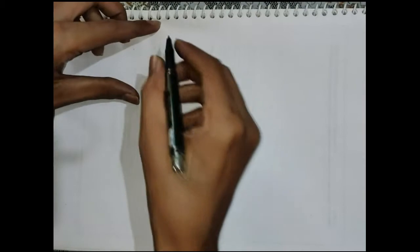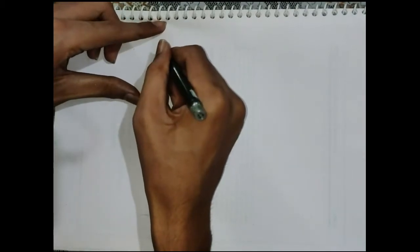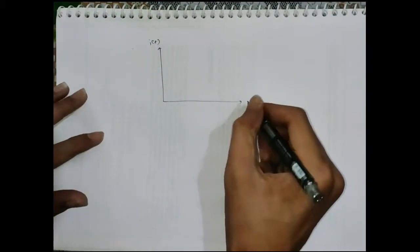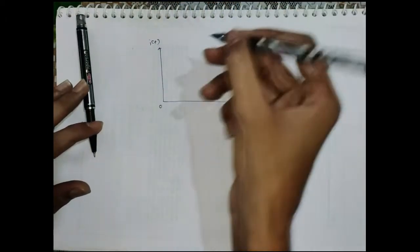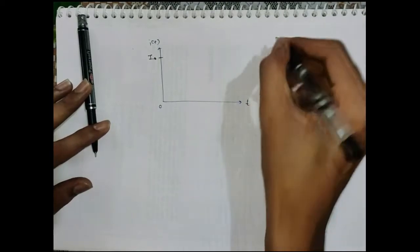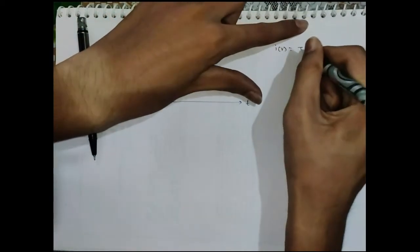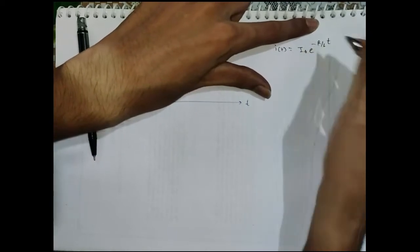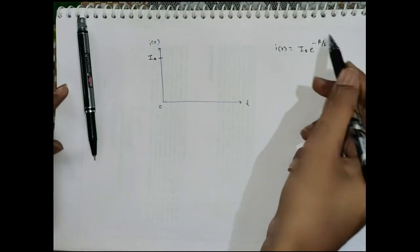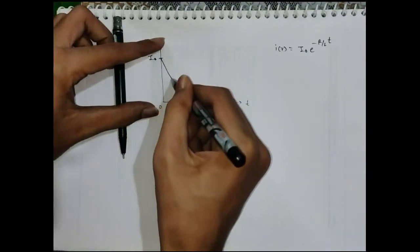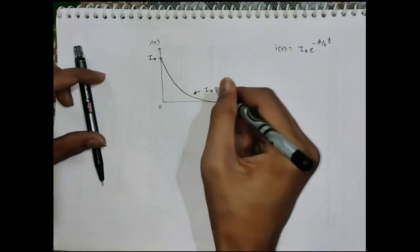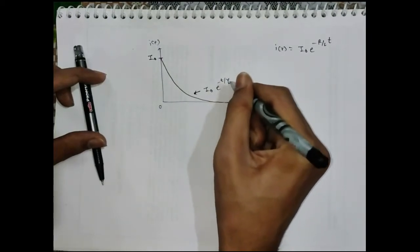Plotting I(t) on the vertical axis and time on the horizontal axis: the maximum value is I₀, and the curve decays exponentially. The equation is I₀ · e^(−R/L · t), which we can also write as I₀ · e^(−t/τ). Now let me explain what the time constant τ is.